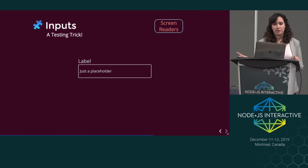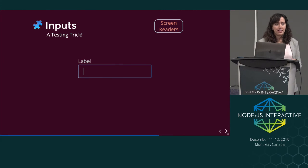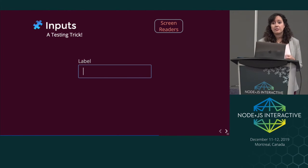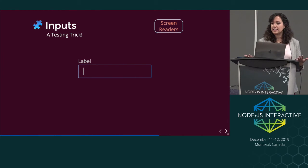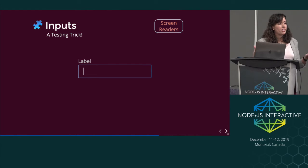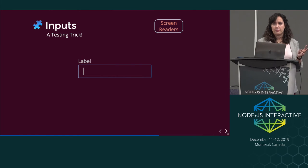A fun way to test this without going all the way into a screen reader — you still have to do that part — is to click on the label of any input, and it should automatically focus you in the input. If it doesn't, that means the two are not properly connected. This also works for checkboxes and radio buttons: if you click on the actual text, like 'read terms and conditions,' it should be checking the checkbox. They do that because the checkbox is a very small tap target, and by making the label an access point for that checkbox, you make it a lot easier for users.